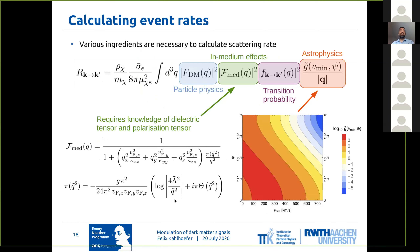Now calculating differential event rates in Dirac materials turns out to be quite difficult because you don't only need the particle physics and astrophysics — you need to worry about in-medium effects, for example with the dielectric tensor and the polarization tensor in the material and the transition probability. But all these details have been worked out.